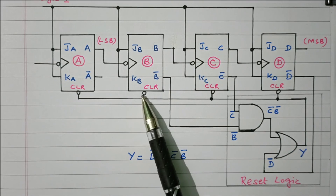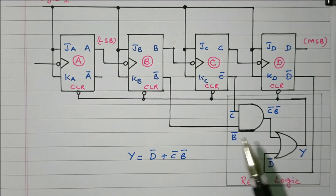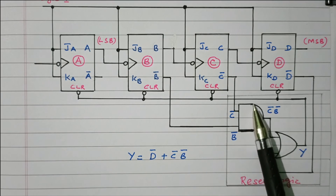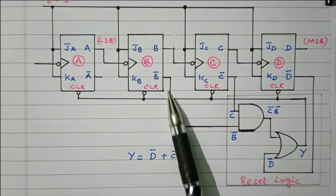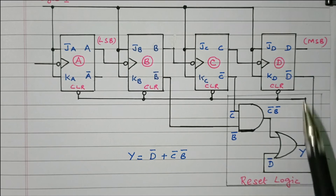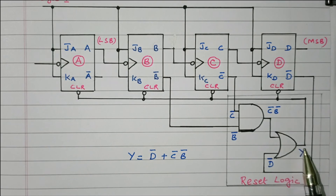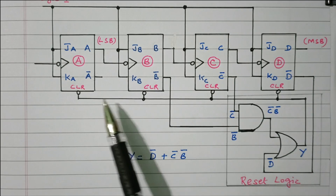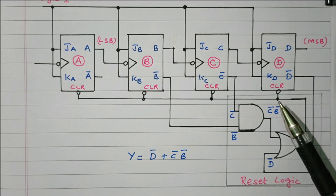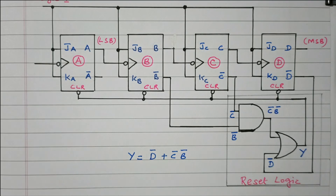The reset logic uses the clear signal, which is also inverted (active low). Y = D̄ + C̄B̄ is implemented: C̄ and B̄ are connected to an AND gate giving C̄B̄, which goes to an OR gate along with D̄, producing Y = D̄ + C̄B̄. This output is connected to the clear input of all four flip-flops. So for 0 to 9 the counter runs normally; when it reaches 10 the flip-flops reset, and the counter starts again from 0.